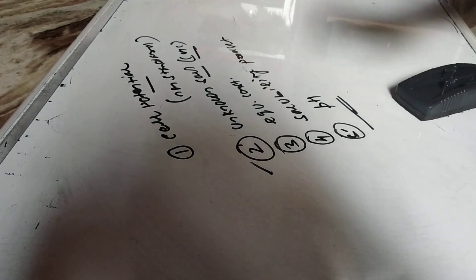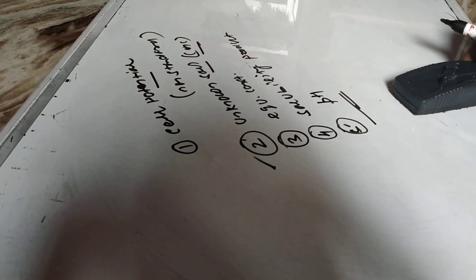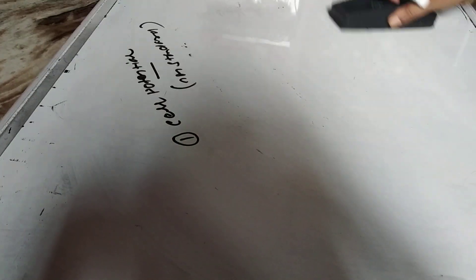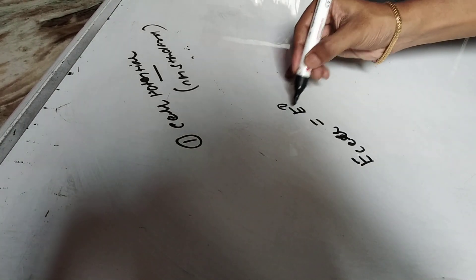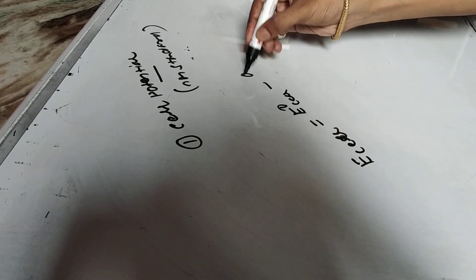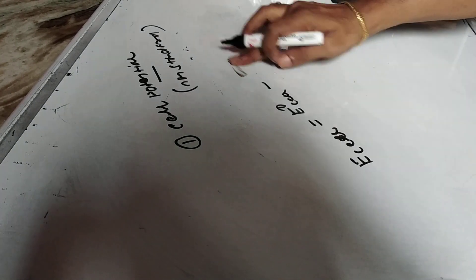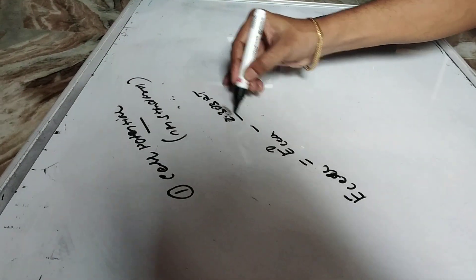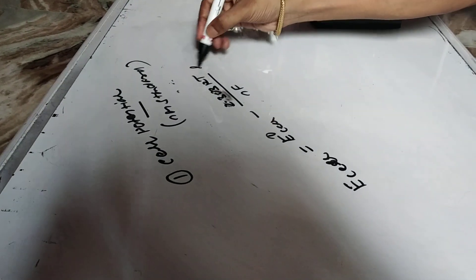Now let us go for the first one — the calculation of cell potential of a non-standard solution. The Nernst equation in general is: E_cell = E°_cell minus (2.303RT / nF) × log Q.